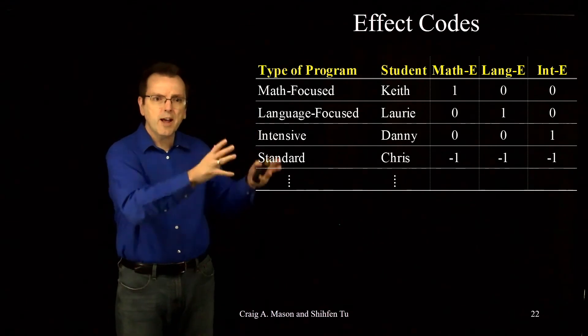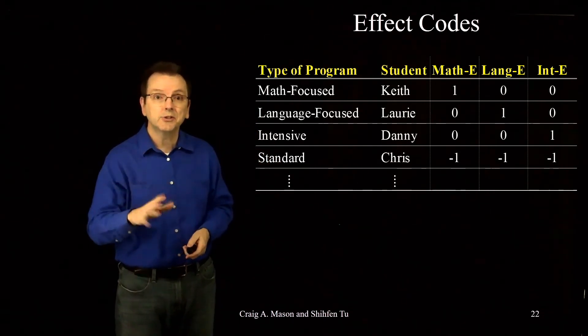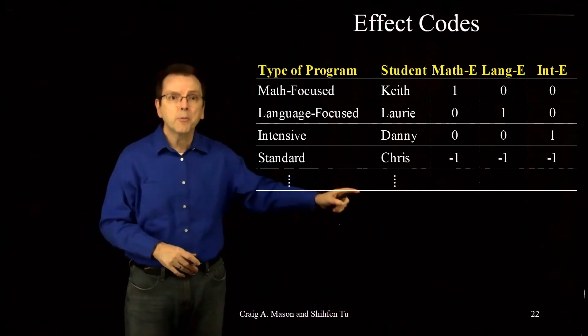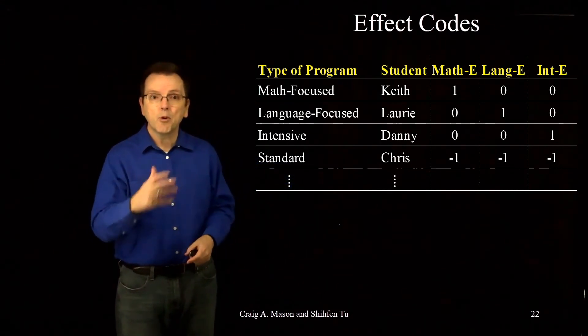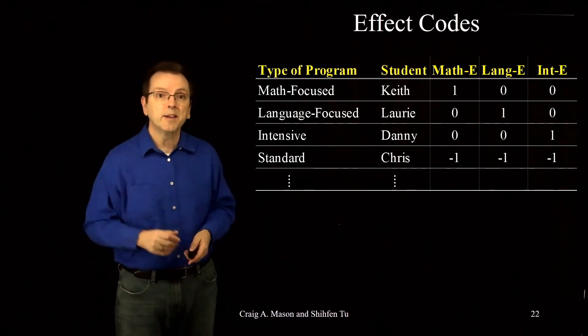Once you've got this down, you just apply this pattern to all of the other students. Pretty straightforward once you remember to use three minus ones for individuals in that group that's not captured by one of the effect codes.